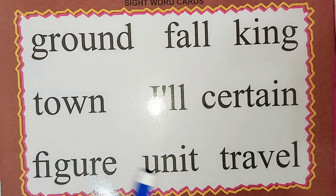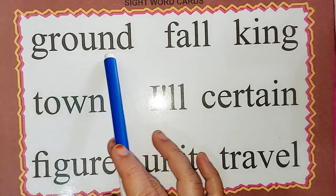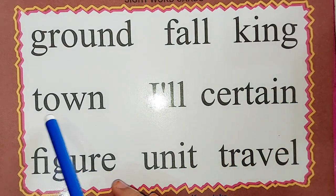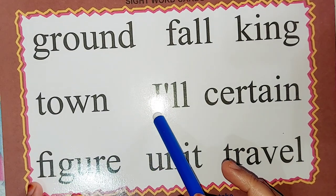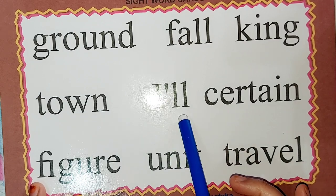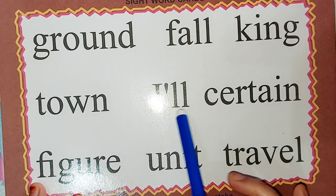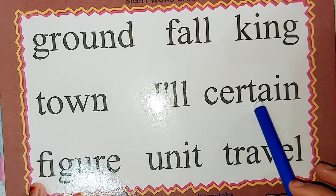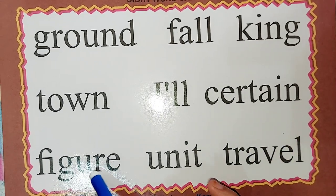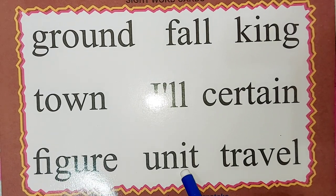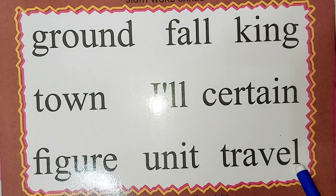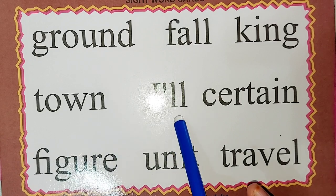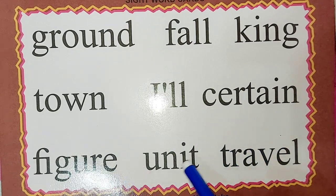The next word is G-R-O-U-N-D: ground. F-A-L-L: fall. K-I-N-G: king. T-O-W-N: town. I apostrophe L-L: I'll — this is the short form of 'I will'; I'll or I will, both are right. C-E-R-T-A-I-N: certain. F-I-G-U-R-E: figure. U-N-I-T: unit. T-R-A-V-E-L: travel. Once again: ground, fall, king, town, I'll, certain, figure, unit, travel.